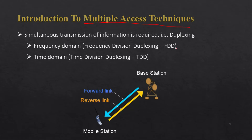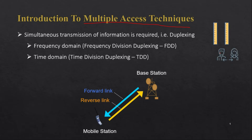Before we start this topic, I will give you one simple example that will help you understand multiple access techniques. Consider that we have two measurement scales and two persons who want to use them. This problem is simple — we can allocate one scale to the first person and another scale to the second person, so both persons will be able to use the scales.